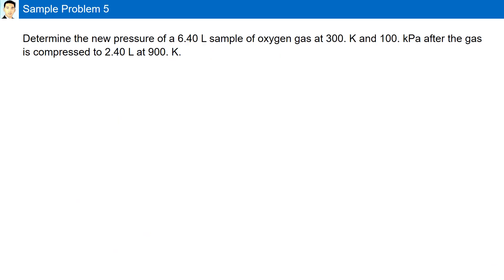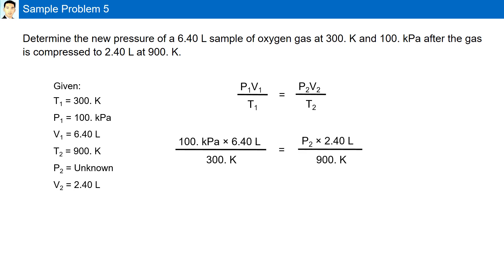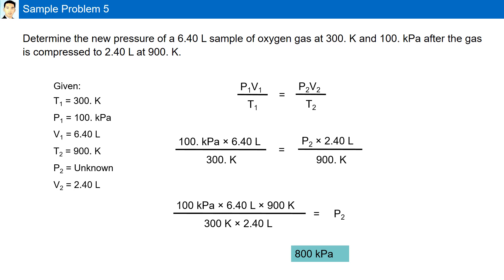Sample problem 5. Determine the new pressure of a 6.4 liter sample of oxygen gas at 300 Kelvin and 100 kilopascals, after the gas is compressed to 2.4 liters at 900 Kelvin. Here we have the given. Using the combined gas law formula and substituting, we have the final pressure as 800 kilopascals.